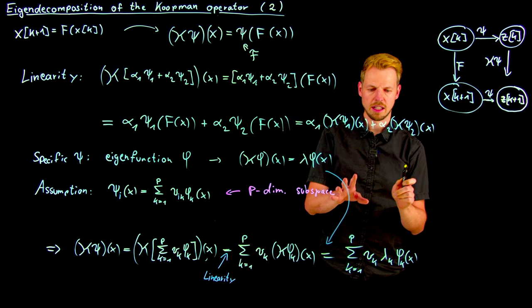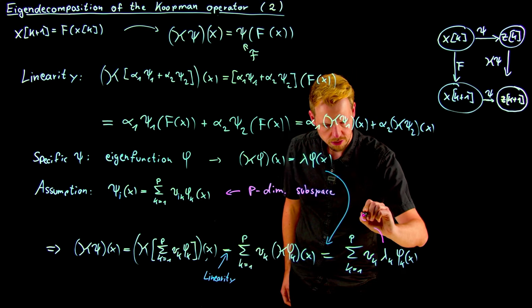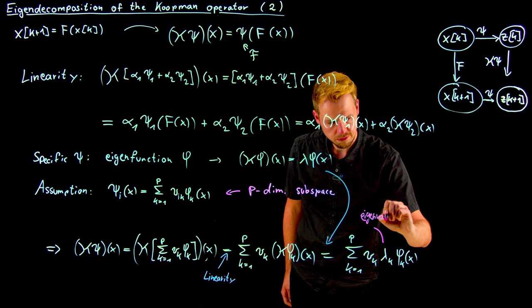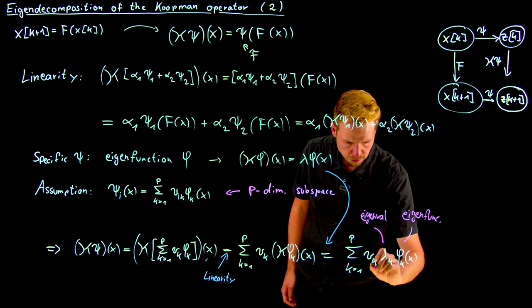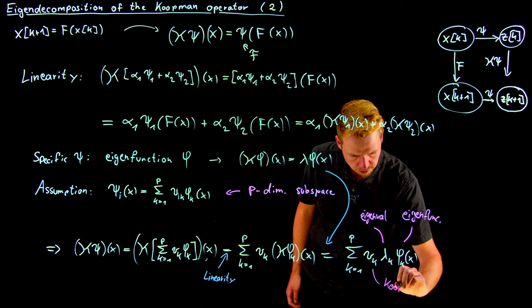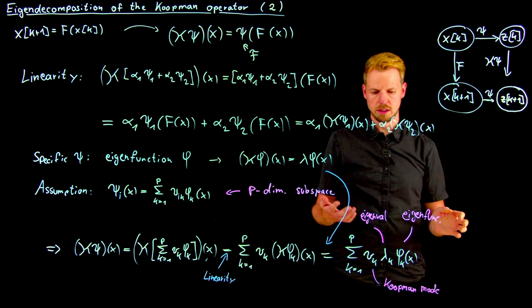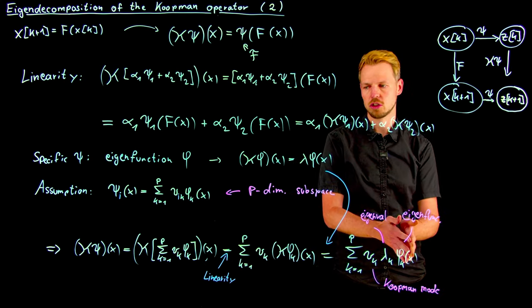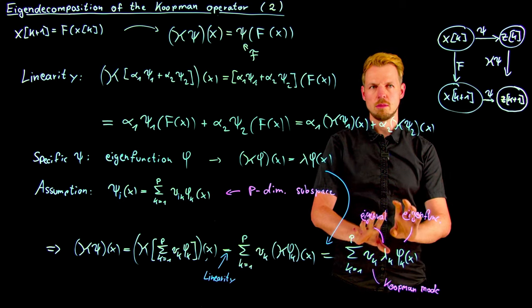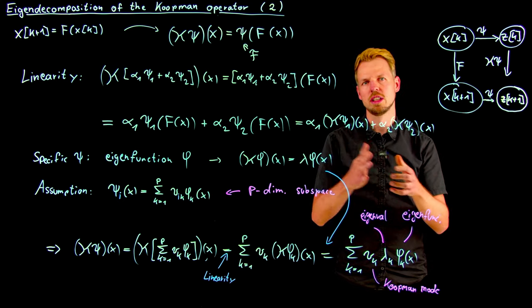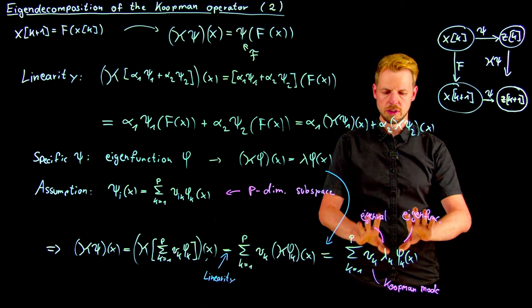And now you see that we have this eigendecomposition that we introduced for linear systems as well. What we see here is we have now an eigenvalue. We have what is denoted or known as the Koopman mode, which is in simple terms simply sort of an amplitude, if you wish, how important this particular function is in reconstructing the observable. So very similar to the linear systems case. If you think about mode, dynamic mode decomposition, then this is no coincidence. We are going to discuss this in one of the next videos. But this is really the key of the eigendecomposition.